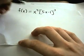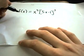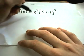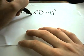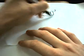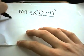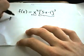Here's another example of finding derivatives using the product rule along with the chain rule. I see two separate pieces here being multiplied.